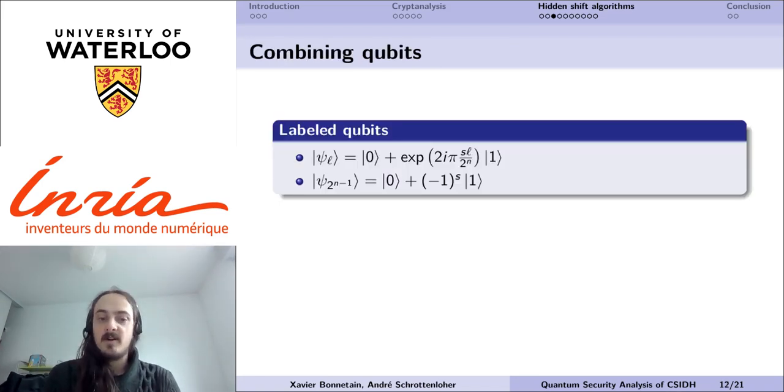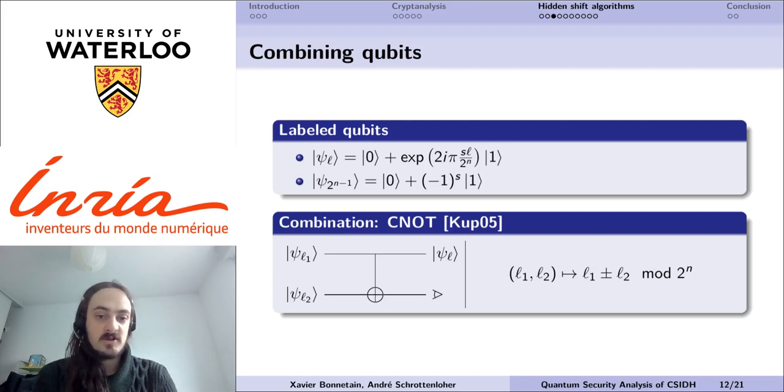First of all, we can remark that with some specific labels, we can obtain some information on the secret directly. For example, with the label 2 to the n minus 1, this qubit will be 0 plus 1 if s is even, and 0 minus 1 if s is odd. Hence, if we can construct it, we can recover the parity of s, and we can do very similarly for other bits of s using some other labeled qubits. So, how can we construct such qubits?